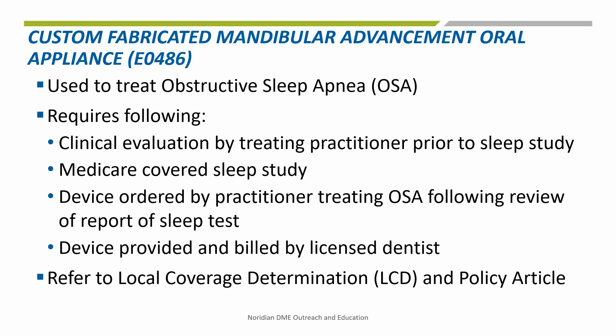Or criterion 3: If the AHI or RDI is greater than 30 and meets either of the following — A: the beneficiary is not able to tolerate a positive airway pressure, or PAP, device; or B: the treatment practitioner determines that the use of a PAP device is contraindicated.